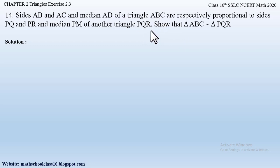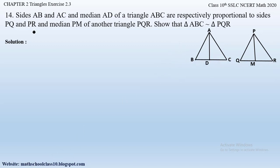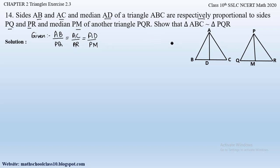There are two triangles — ABC and PQR — so let us draw both. AD is the median of triangle ABC and PM is the median of triangle PQR. Given: since the word 'respectively' is used, we write AB/PQ = AC/PR = AD/PM. We have to prove that triangle ABC is similar to triangle PQR.